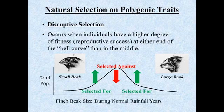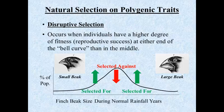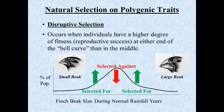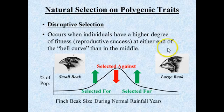During drought years, there are far fewer seeds, and the plants on this island produce either very small seeds — think sesame-seed size or smaller — or very large seeds, like a walnut. In this situation, birds with a medium-sized beak are at a disadvantage. Birds with a small beak can handle tiny seeds much faster and more efficiently, while birds with a very large beak can handle large seeds much more efficiently than a medium-beaked bird.